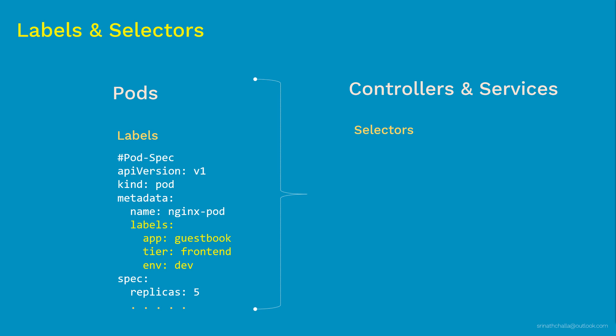This pod spec will deploy five nginx pod instances inside the Kubernetes cluster, and all five instances have the same labels. On the other side, we have selectors. Controllers and services manage those five pods using selectors, which contain the pod labels. There are two different ways to define selectors: the old equality-based approach used in ReplicationController, and the newer set-based selectors used in ReplicaSet.